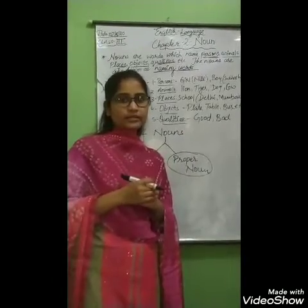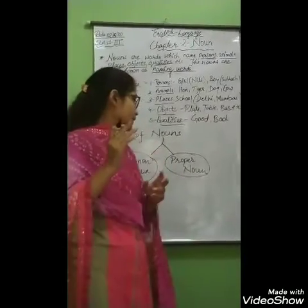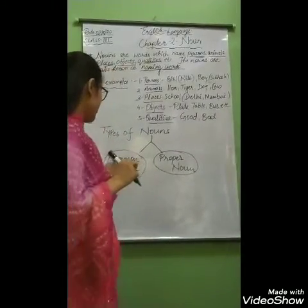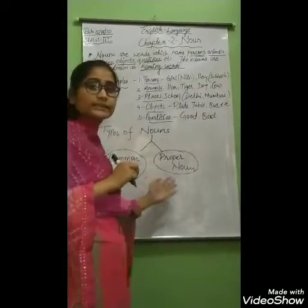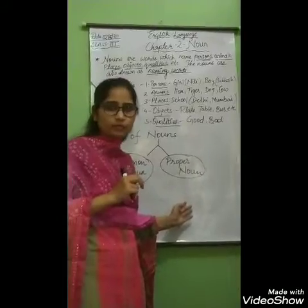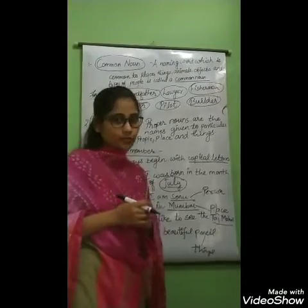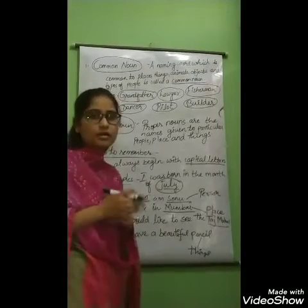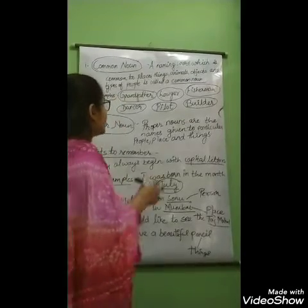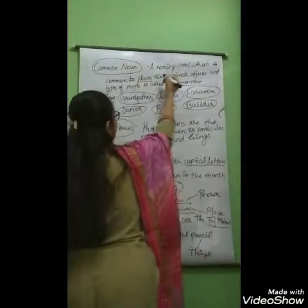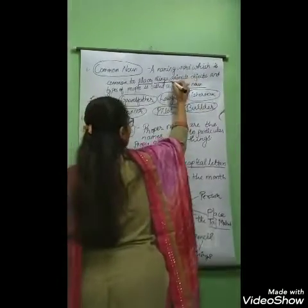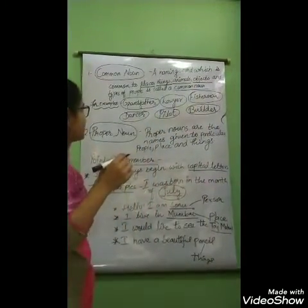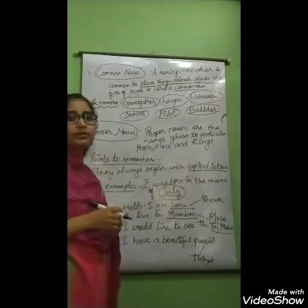Now the next point: types of nouns. In this chapter we will study two types of nouns. The first one is common noun and the second one is proper noun. A common noun is a naming word which is common to places, things, animals, and objects. These types of words are called common nouns.